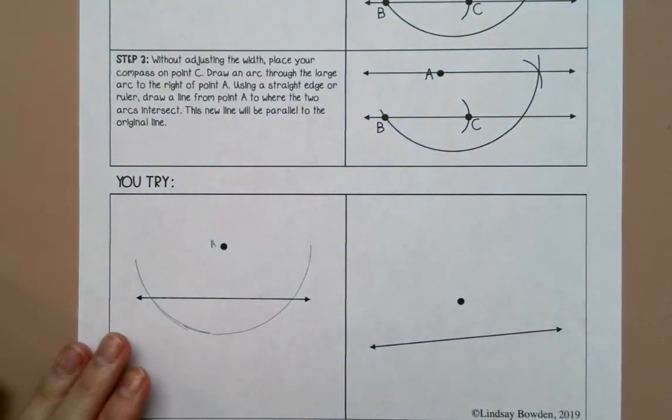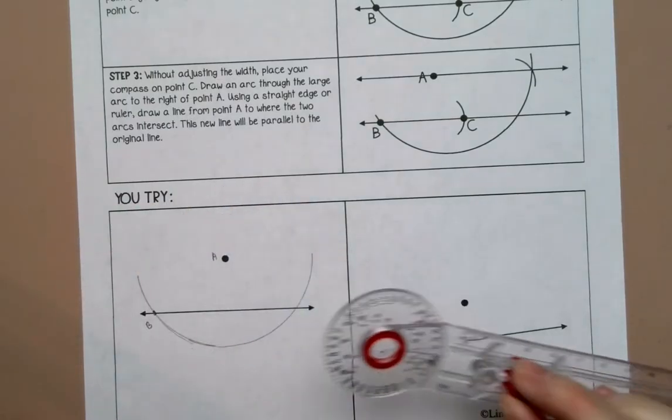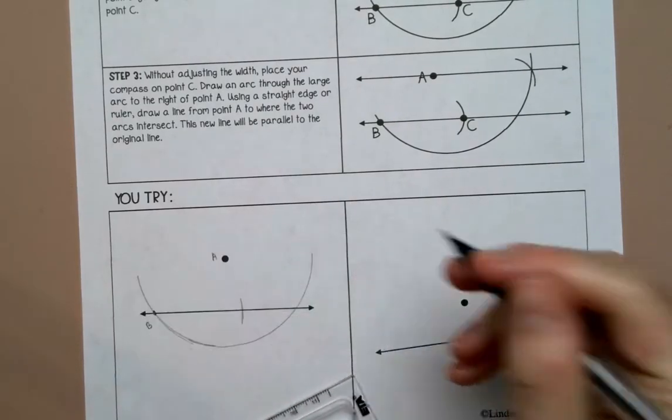I'm going to label this B. Without adjusting the width, I'm going to put my compass on B and draw an arc here and label that C.